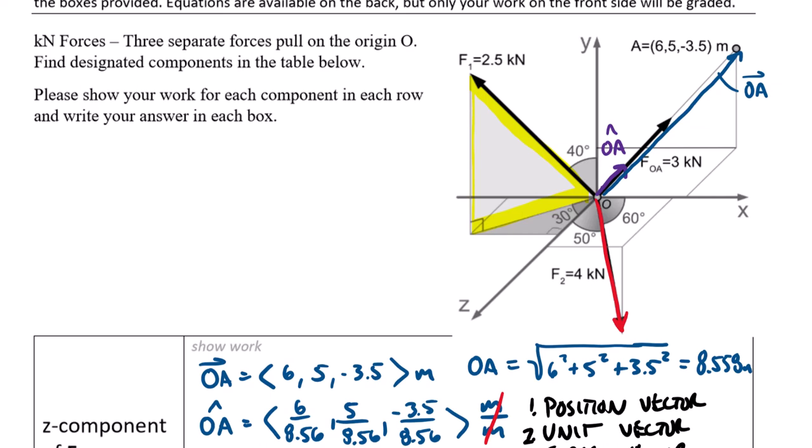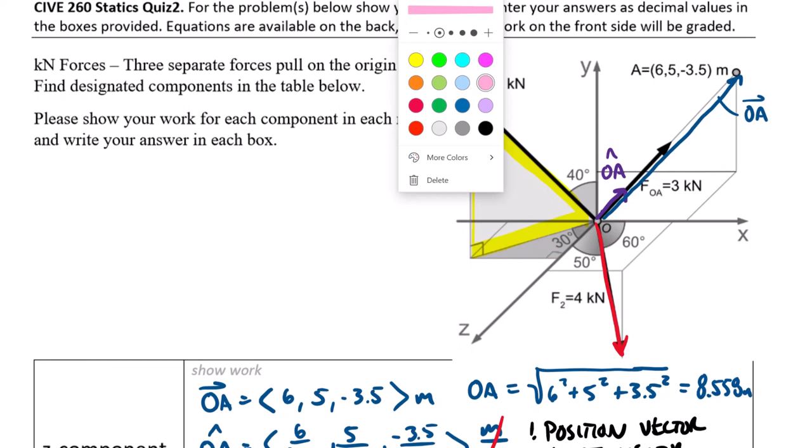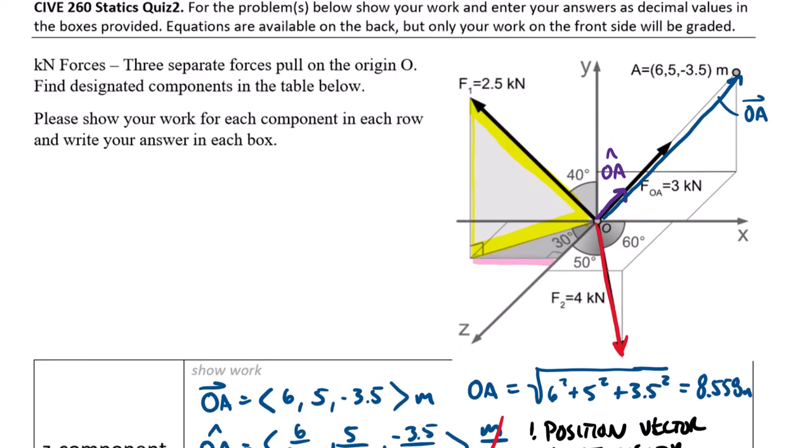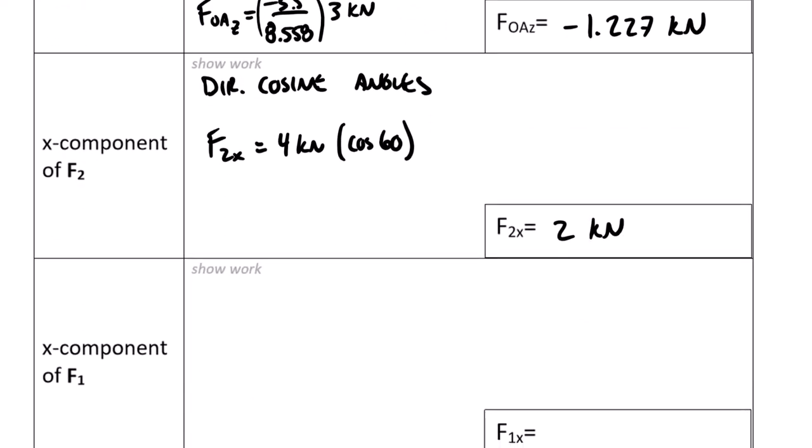To find the x-component of F1, which is this length along this side right here, it's a two-step process. One is going to be to project F1 down into this xz plane. This angle here will be 50 degrees since the complementary angle up to the y-axis is 40. First we'll take F1 times the cosine of 50, and then we'll use that as a hypotenuse of a new triangle and take that value, which we'll call F1 xz, times the sine of 30.